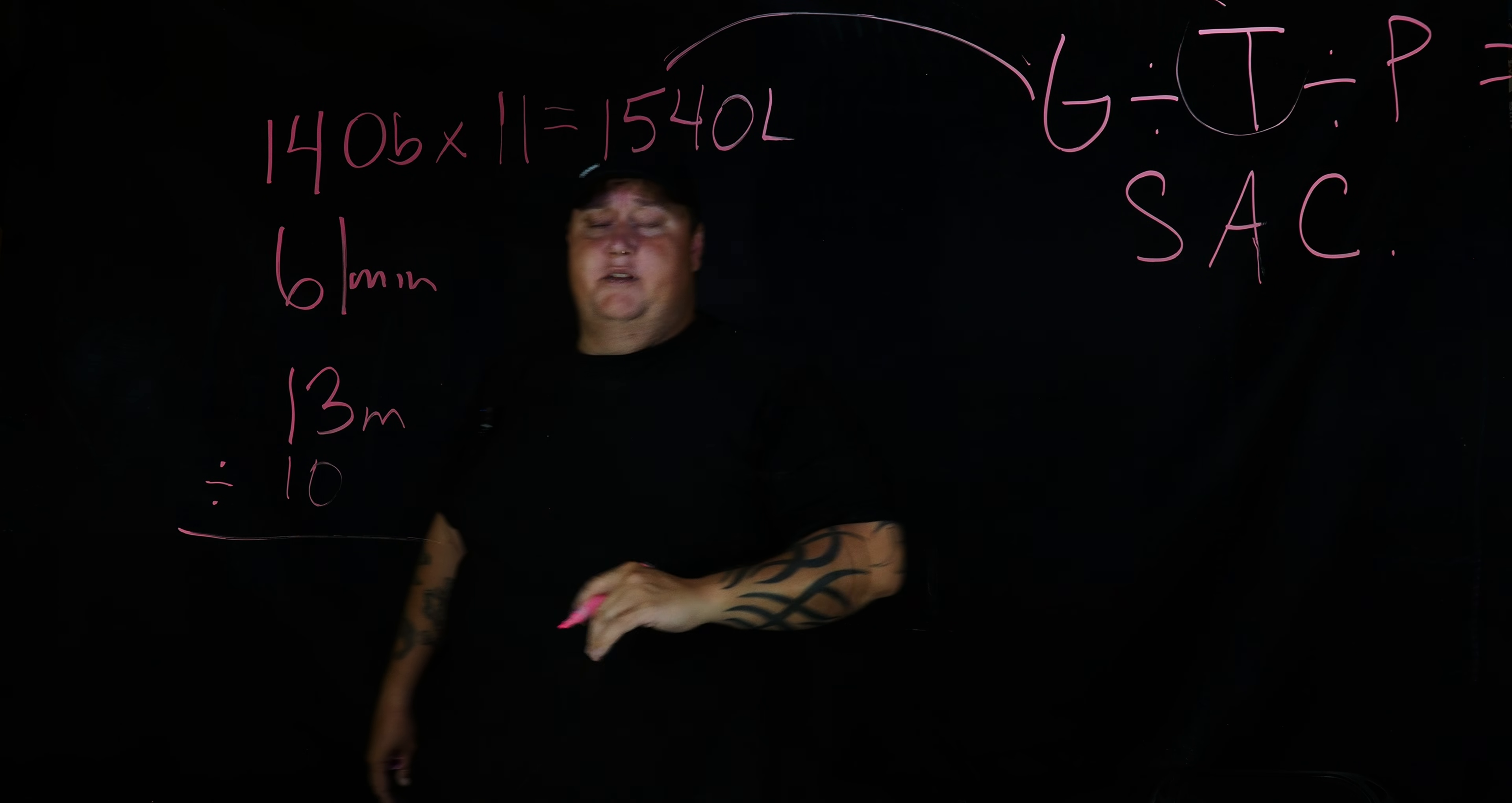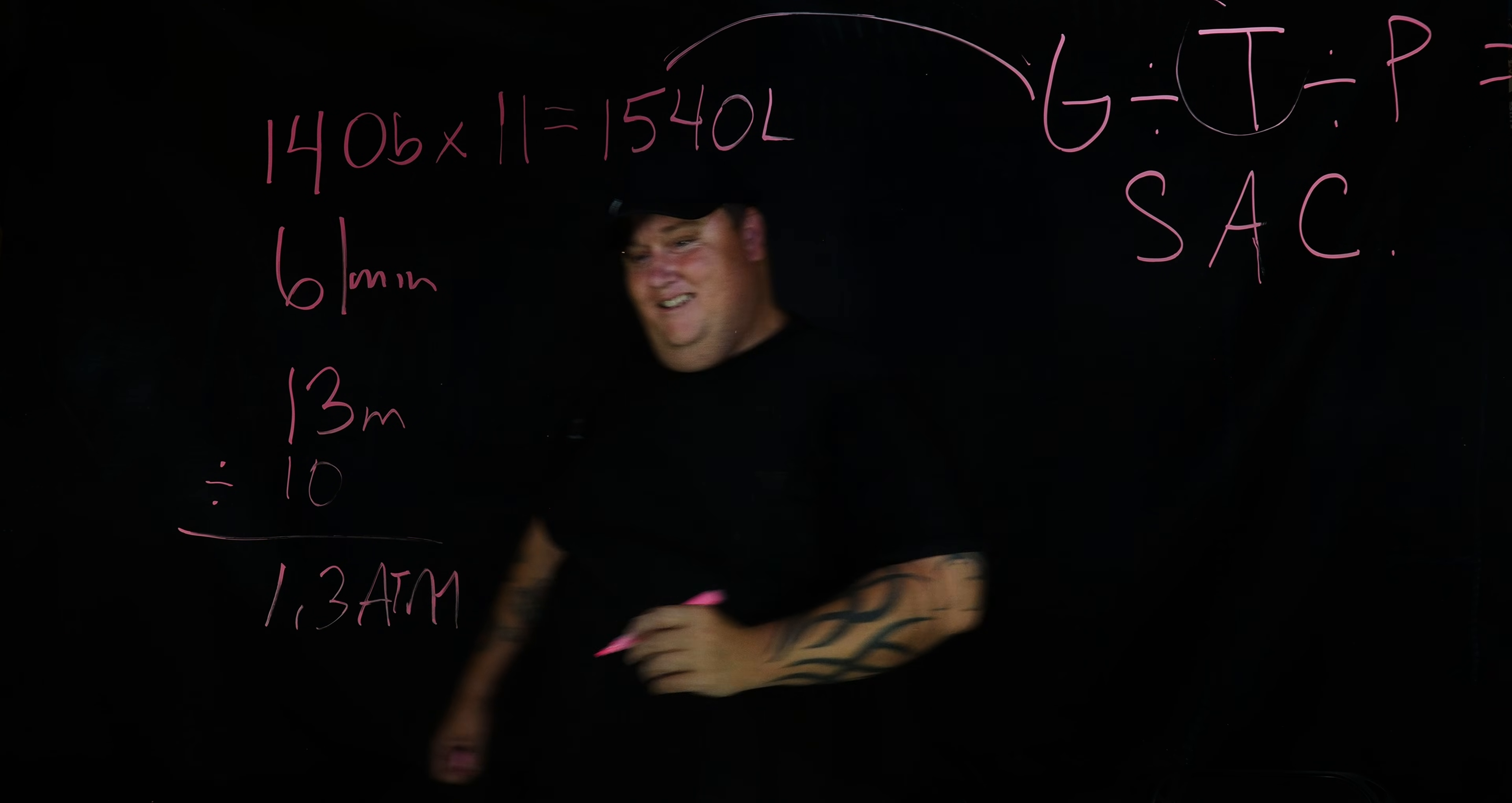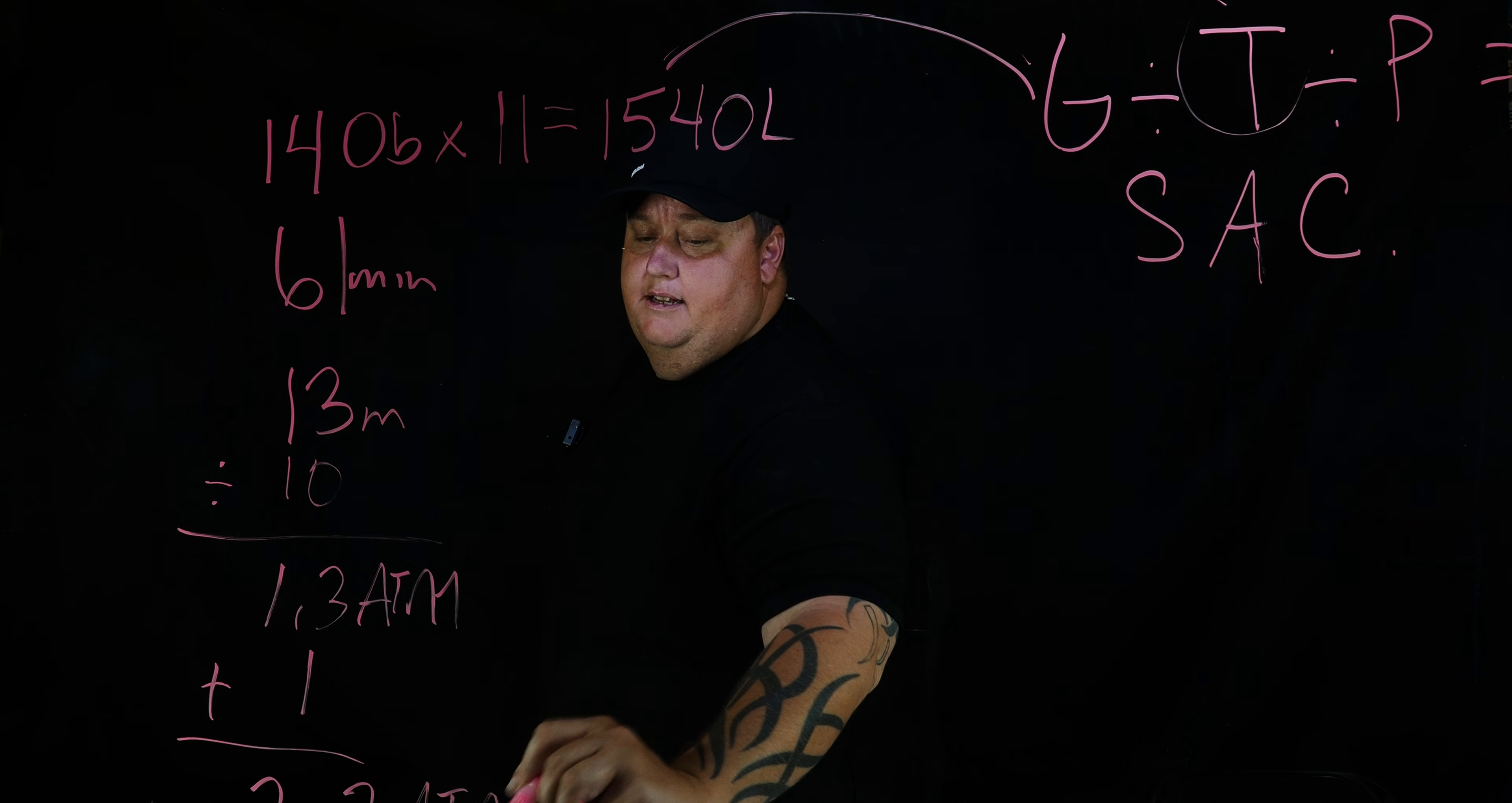So what I got to do is divide 13 by 10, because you guys know there's an atmosphere for every 10 meters deep we go. If you're doing imperial system, just make that 10 a 33. All right, so it comes out to 1.3 ATM. Now I'm going to add one because we also have one atmosphere of pressure here on the surface. Now it comes out to 2.3 ATM.